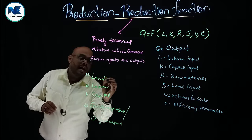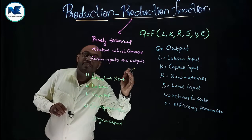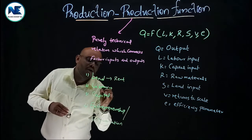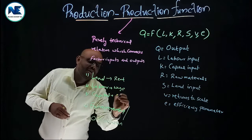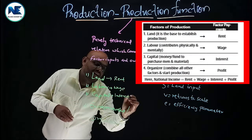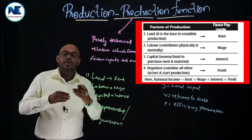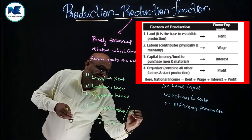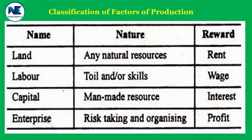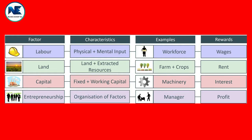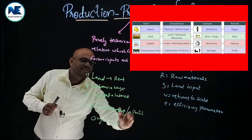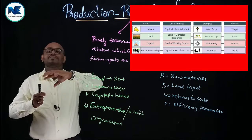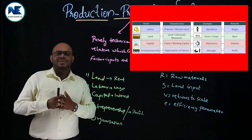Production is the result of the combined effort of the four factors of production: land, labor, capital, and entrepreneurship or organization. The landowner gets rent as their factor payment, the worker gets wages, the capital owner gets interest, and the entrepreneur or organizer gets profit. So production means the combined efforts of these four factors resulting in the transformation of input into output.